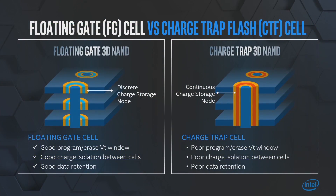There are a few other technologies out there, so I'm going to compare and contrast the strengths and weaknesses of each. On the right is the technology that some of our other colleagues are using: charge trap flash, charge trap 3D NAND. The key difference, as you can see, is they have a continuous charge storage node — not discrete, but continuous. This continuous charge storage node leads to spread of charge between adjacent cells, resulting in poor charge isolation between cells.